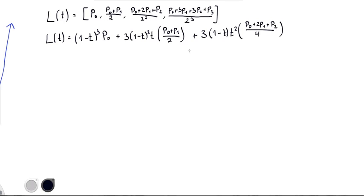And then I'll write the last part down here, so this is T cubed times P0 plus 3P1 plus 3P2 plus P3 all over 8. Okay, so this is sort of a nasty expression.